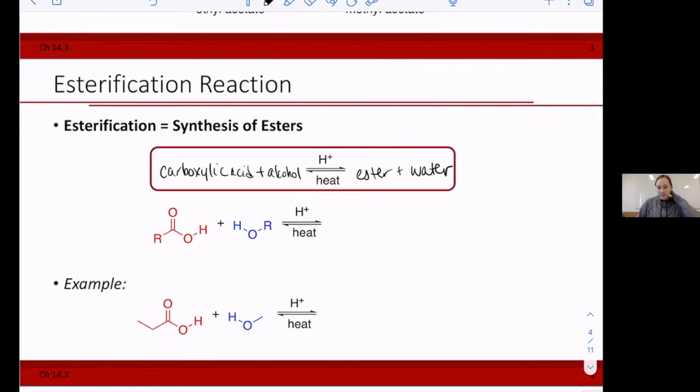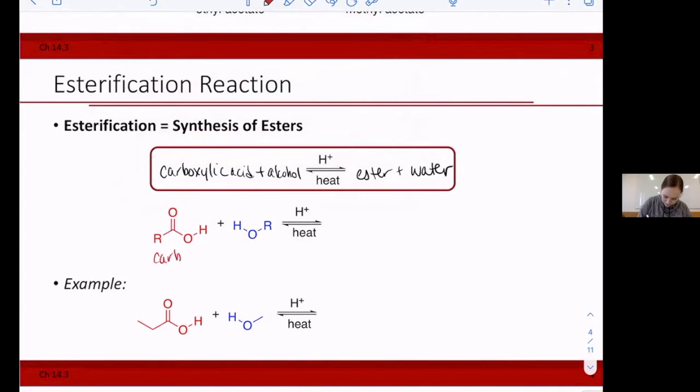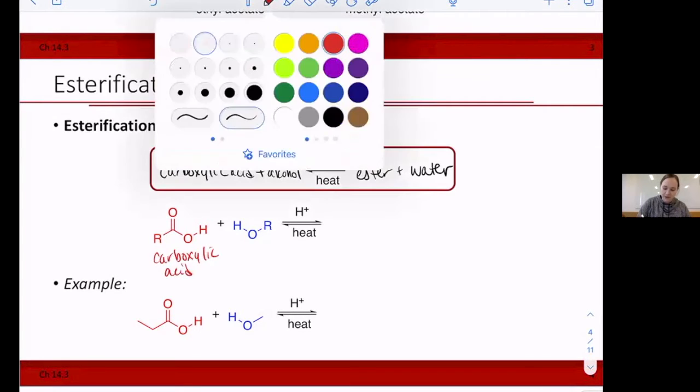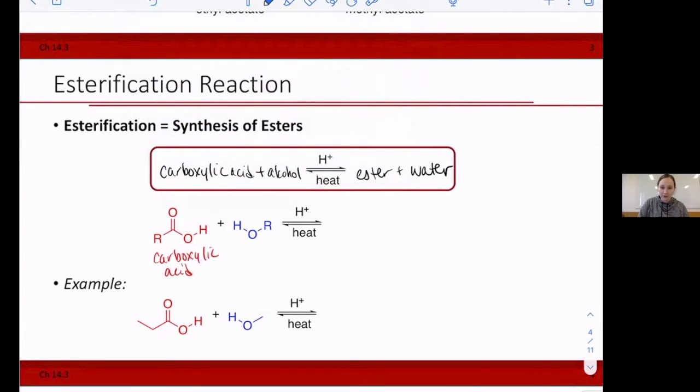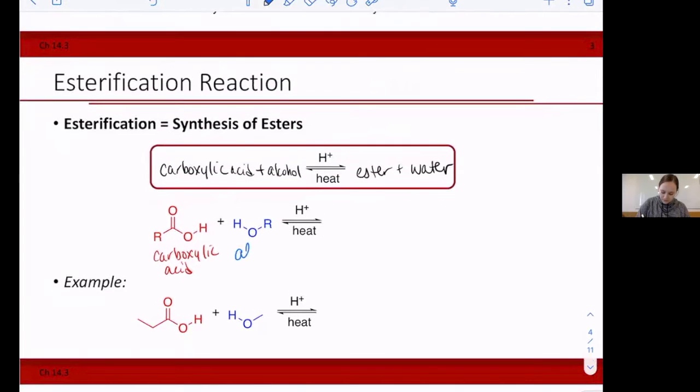So really what happens, you see I have a carboxylic acid here in red, and then you have your alcohol. I just put R groups here, so you have an OH group. You have your carboxylic acid and your alcohol.